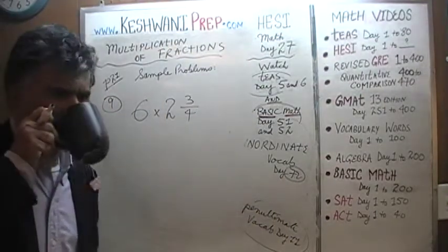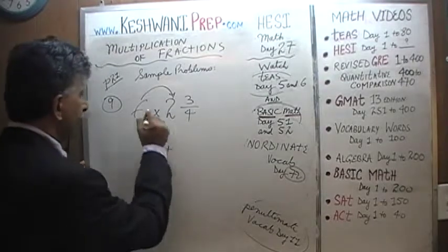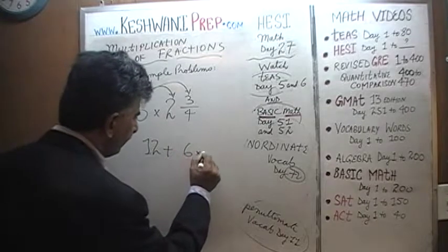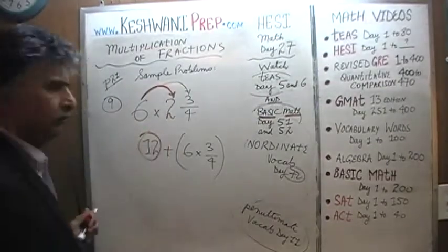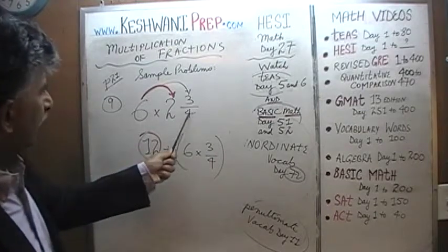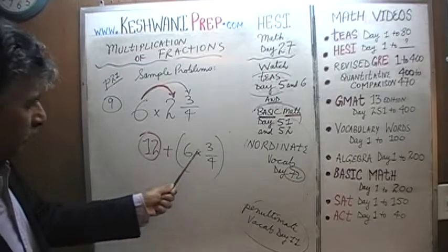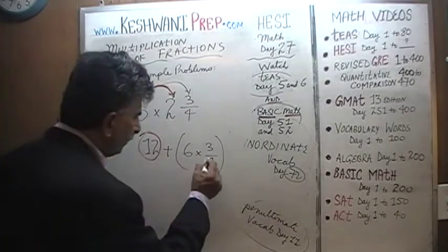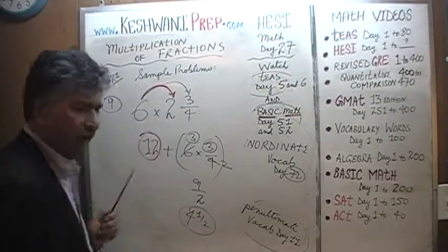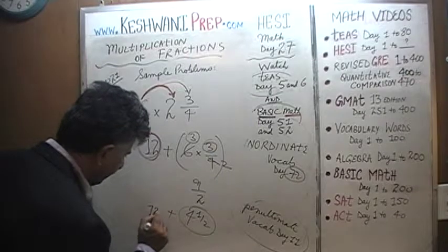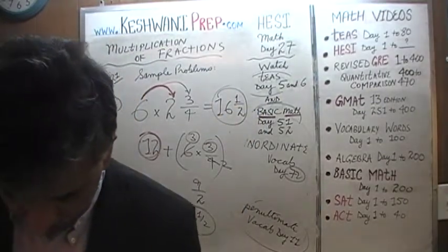It's very simple and straightforward. 6 times 2 is 12. Now 6 times 3 quarters: we see a 6 and a 4 — divide top and bottom by 2 — so 4 becomes 2 and 6 becomes 3. That gives us 3 times 3 over 2, which is 9 over 2, which is 4 and a half. Add the 12: 12 plus 4 and a half is 16 and a half. The answer is 16 and a half.